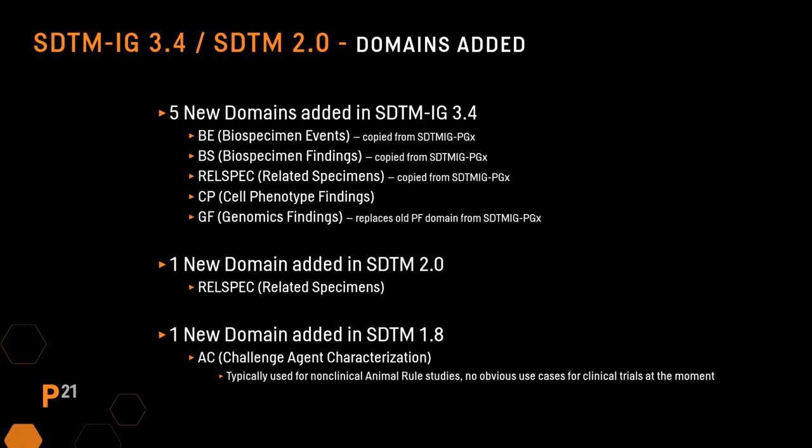Five new domains were added in SDTM IG 3.4. The first three — biospecimen events, biospecimen findings, and related specimens — are copied from the older provisional pharmacogenomics and genetics guidance, SDTM IG PGX from 2015, which is being retired. The cell phenotype domain is new, and the genomics findings domain replaces the old PF domain from SDTM IG PGX. REL SPEC is also a new special purpose domain listed in SDTM 2.0, and there is a new challenge agent characterization domain added to SDTM 1.8 for use with SendIG Animal Rule, although it is technically allowed for clinical trials if needed.